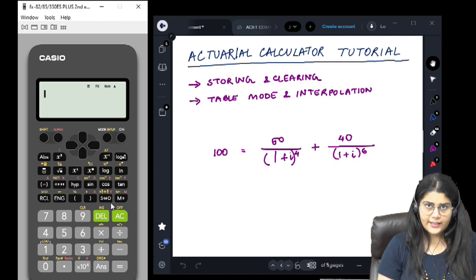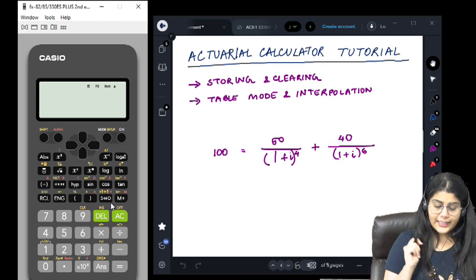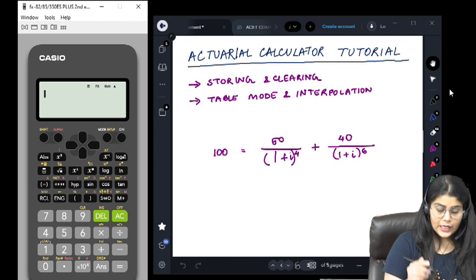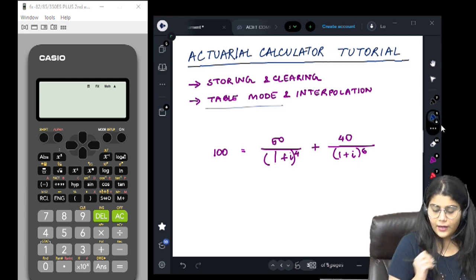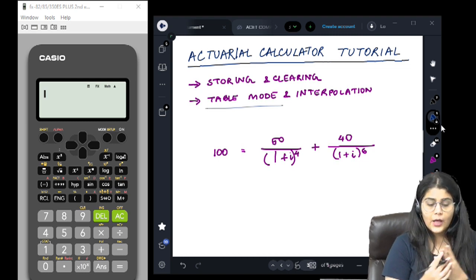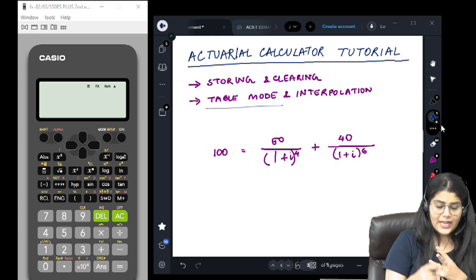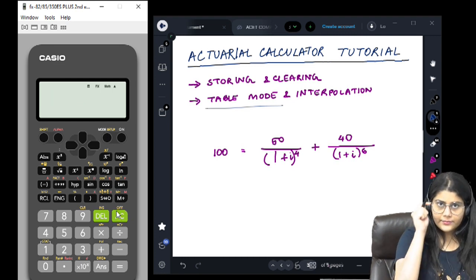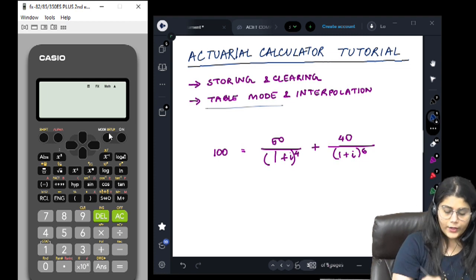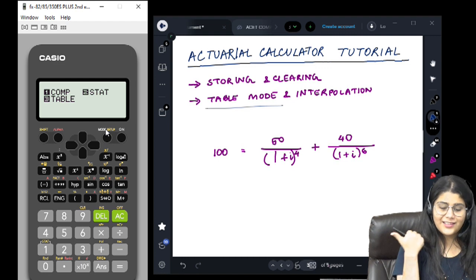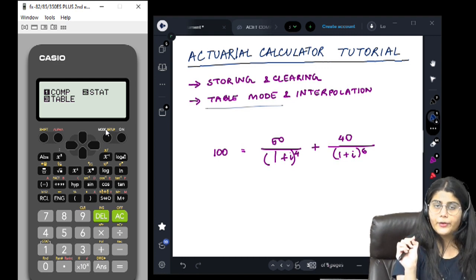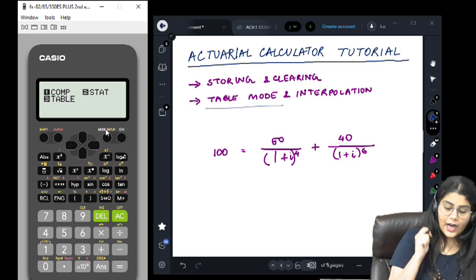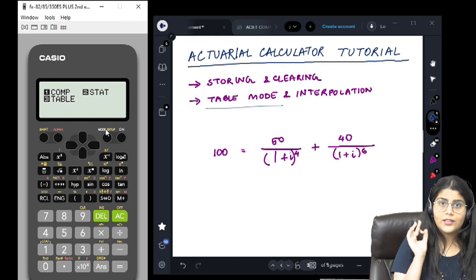Next we have a very important thing: the table mode used for interpolation, very widely used in your actuarial science papers. In your calculators, there are primarily three modes: computation mode, which is the mode we are using right now, the COMP mode. How did I arrive at this menu? There is the mode button just beside the on button. You can see there is a comp mode, a stat mode, and a table mode. Currently we are on comp mode, which is basically the basic mathematics mode. The stat mode will be covered in a separate video.